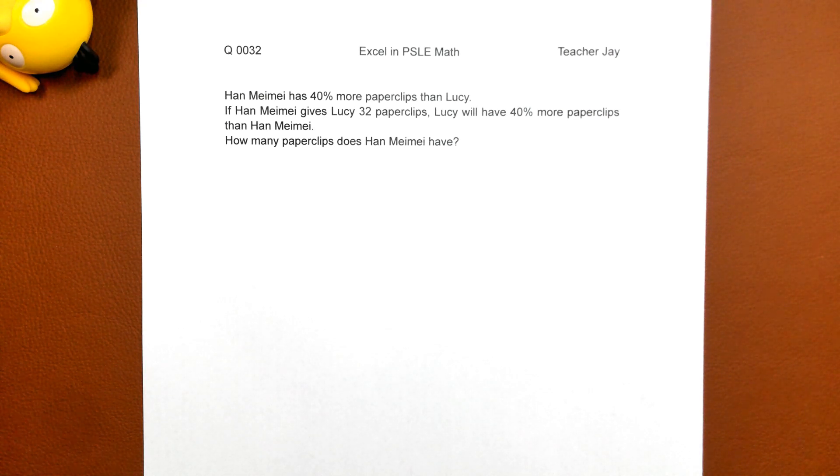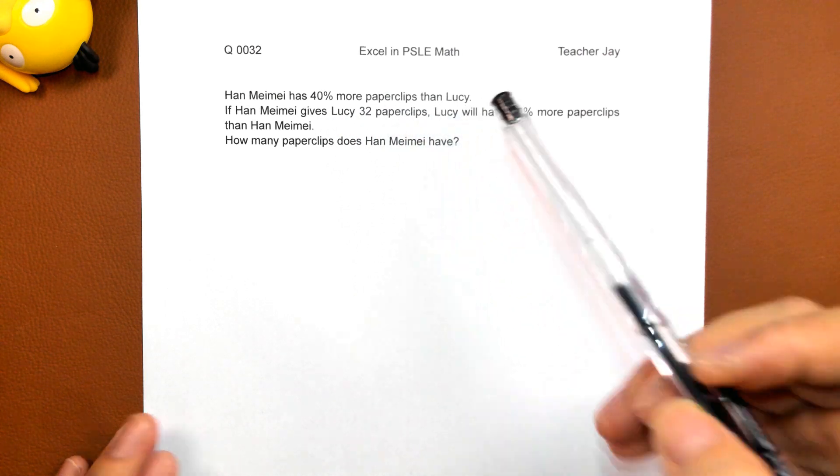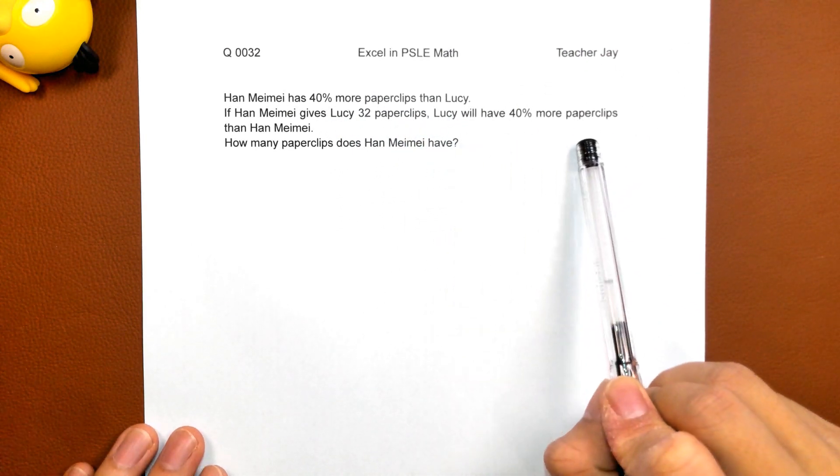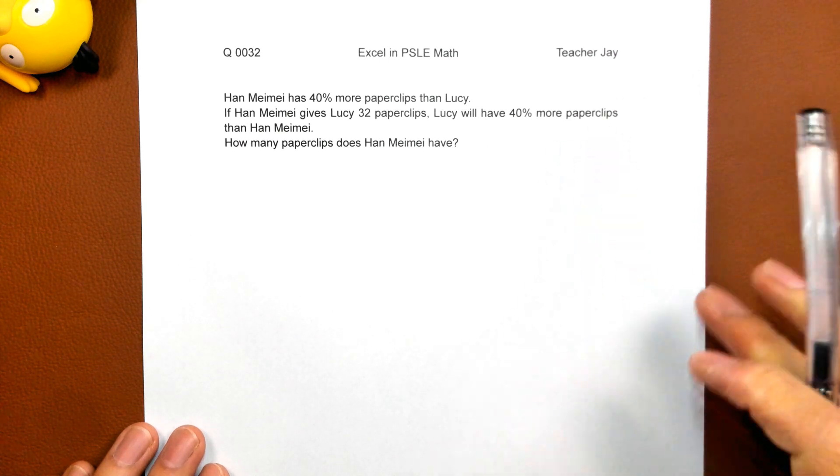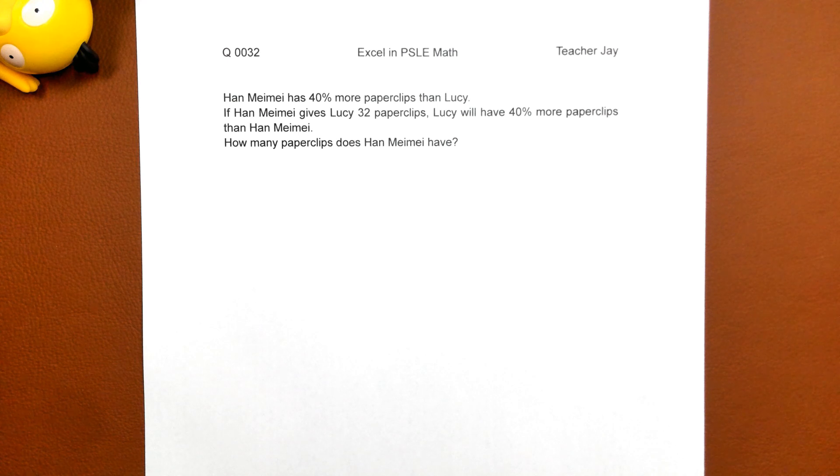This is a good question about exchange position. Because at first Han Mei Mei has 40% more than Lucy. But in the end Lucy will have 40% more paper clips than Han Mei Mei. What happened to this situation? They change position.